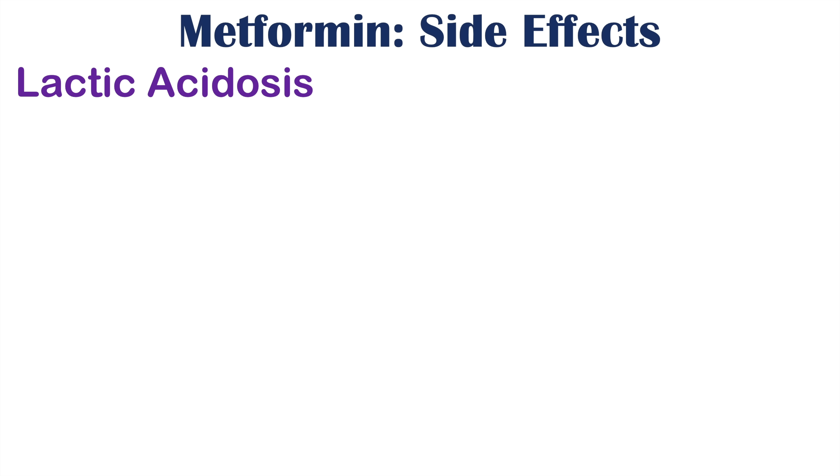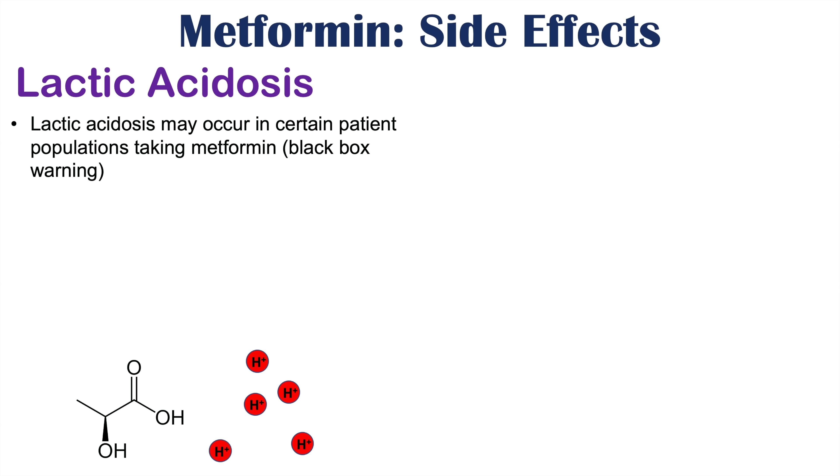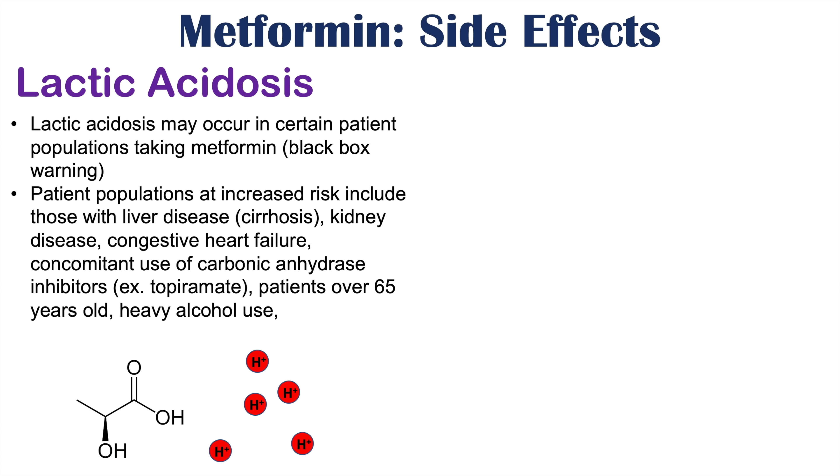A very significant side effect that can occur with metformin use is lactic acidosis, which carries the black box warning for metformin. Particular patient populations at increased risk include those with liver disease — especially cirrhosis — kidney disease, congestive heart failure, those on carbonic anhydrase inhibitors such as topiramate, older patients over age 65, and heavy alcohol consumers.